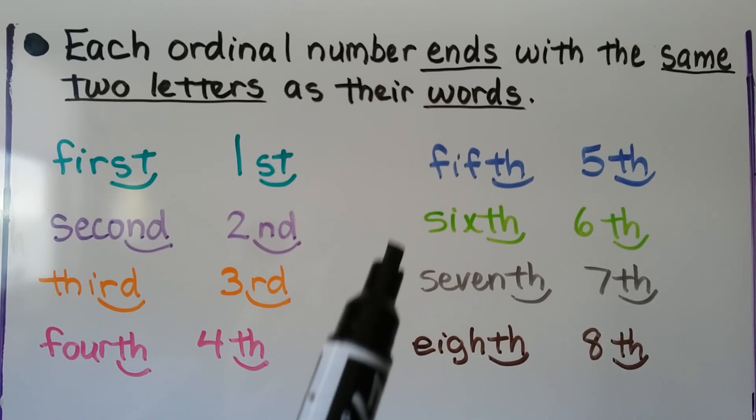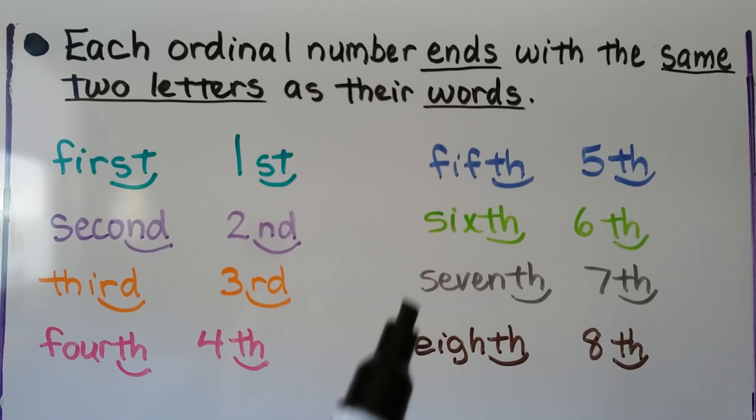We do the same thing with all the rest. Fifth, sixth, seventh, eighth. They end in a TH. We write a 5, 6, 7, 8 with a TH after them.